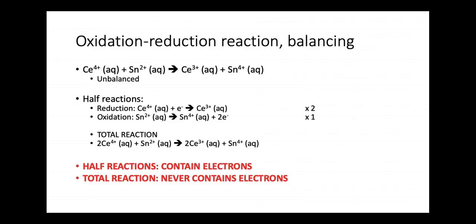Another example — an unbalanced reaction: Ce⁴⁺ + Sn²⁺ → Ce³⁺ + Sn⁴⁺. We see the charges are changing: Ce goes from 4+ to 3+ (reduction, gaining an electron), and Sn goes from 2+ to 4+ (oxidation, losing two electrons). So we write the two half reactions: Reduction — Ce⁴⁺ + e⁻ → Ce³⁺. Oxidation — Sn²⁺ → Sn⁴⁺ + 2e⁻.